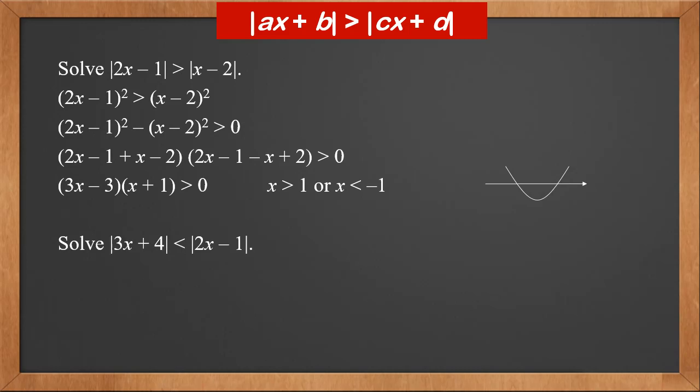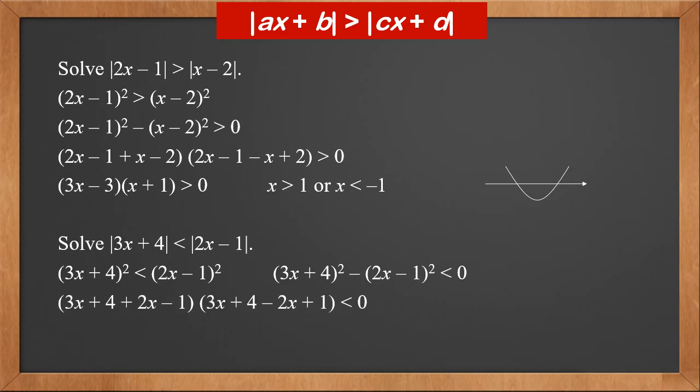Solve the modulus of 3X plus 4 less than the modulus of 2X minus 1. Square both sides: we get (3X plus 4) squared less than (2X minus 1) squared. Change it to (3X plus 4) squared minus (2X minus 1) squared less than 0. Factorize it into (3X plus 4 plus 2X minus 1) times (3X plus 4 minus 2X plus 1) less than 0. This is (5X plus 3)(X plus 5) less than 0.